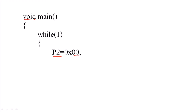In Embedded C, a hex number is written in the format 0x followed by the hex value. So to switch off all LEDs, on port P2 we send 0x00. We only have to use the name of the register, so simply write: P2 = 0x00. All LEDs will switch off, and then we call the delay function. All LEDs will be in the off state for the duration of the delay period.